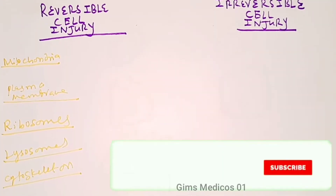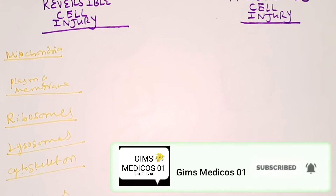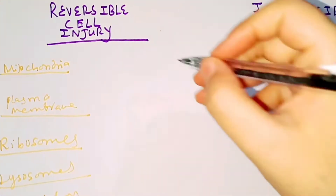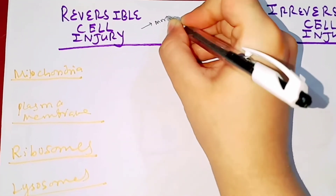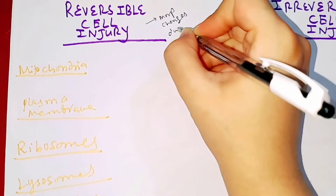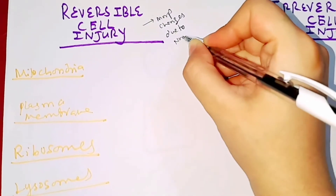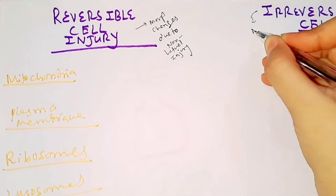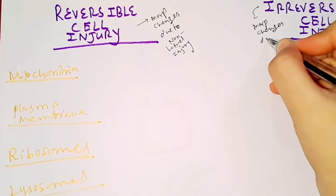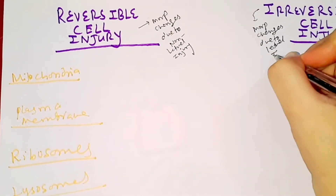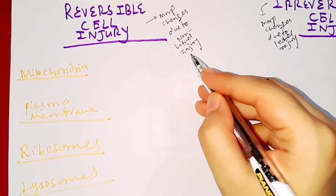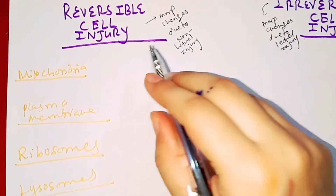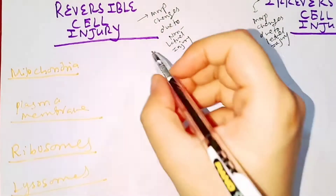The difference between reversible and irreversible cell injury: in reversible cell injury, the morphological changes are due to non-lethal injury, whereas in irreversible cell injury they are due to lethal injury. Reversible injury is non-lethal because it can reverse back to normal state after removal of the stimulus, but irreversible injury persists, making it lethal.